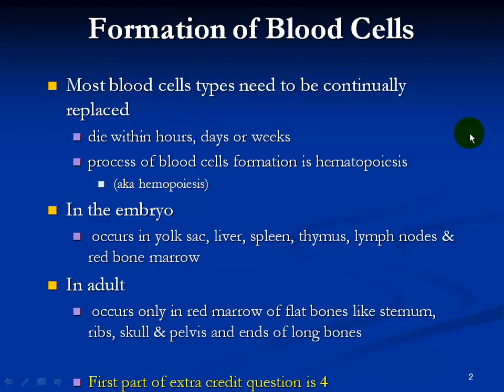Formation of blood cells. Most blood cells need to be continually replaced because they die within hours, a few days, or some of them a few weeks. The process of blood cell formation is called hematopoiesis — also known as hemopoiesis. It occurs in the embryo in the yolk sac, the liver, the spleen, the thymus, the lymph nodes, and the red bone marrow. Once you're born and become an adult, it only occurs in the red marrow of flat bones or the ends of the long bones.